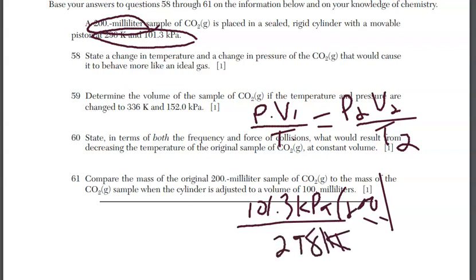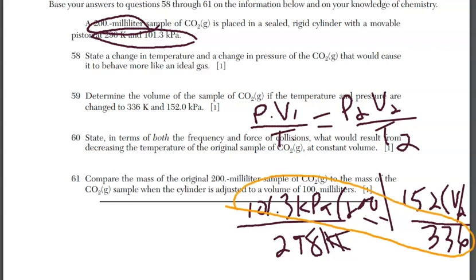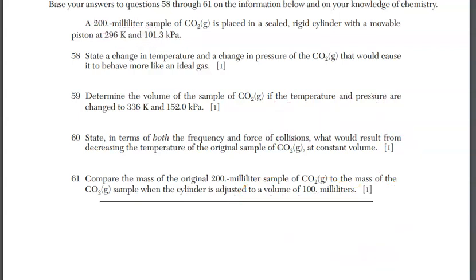On the other side we're looking for volume: P₂ = 152 kPa, V₂ is unknown, T₂ = 336 K. It's just a matter of cross-multiplying and dividing to get the answer. Use that calculator — you should get an answer of 150 milliliters. Make sure you go through the trouble of setting everything up correctly and actually calculate the answer.